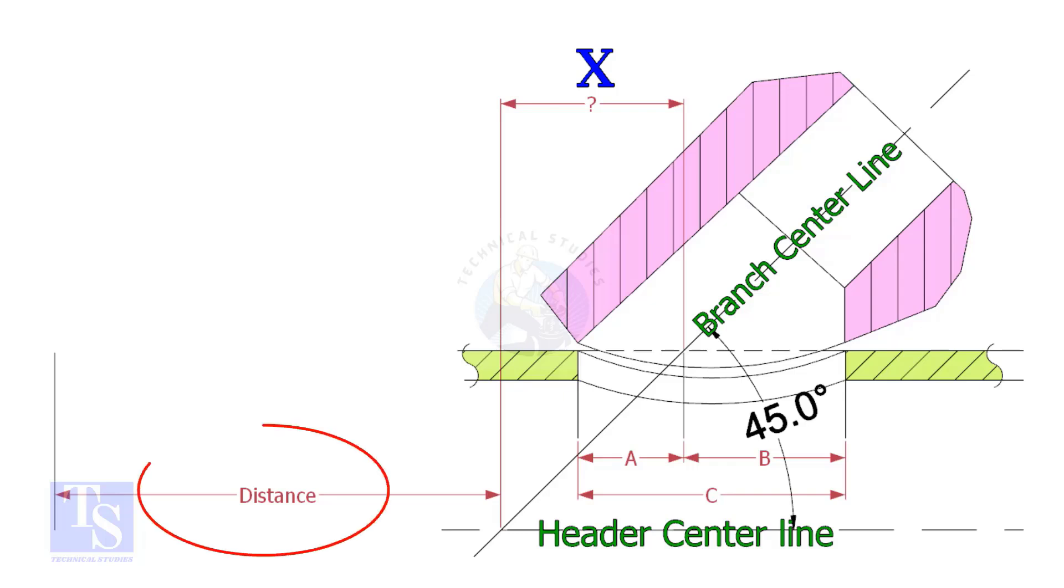In a drawing, the distance to the center of a laterolette is given from a certain point. This distance is actually on the center of the header pipe. By applying a simple calculation, we can find the actual center that comes on the top of the pipe.